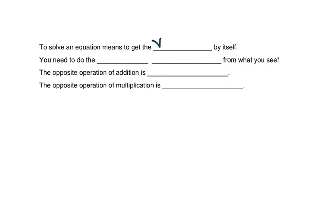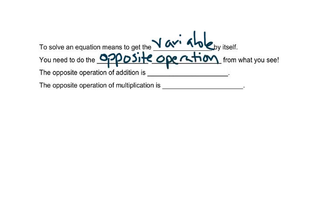To solve an equation means that you're trying to get the variable or the letter by itself. In order to do this, you need to do the opposite operation from what you see beside that letter. So the opposite operation from addition is subtraction, and the opposite operation from subtraction is addition. The opposite operation from multiplication is division, and the opposite operation of division is multiplication.